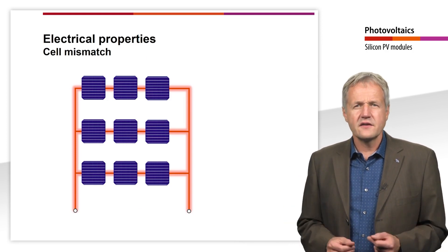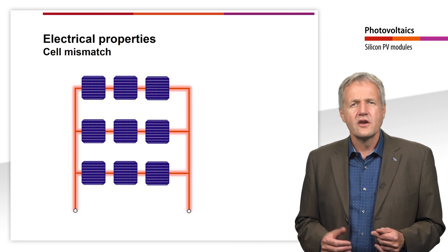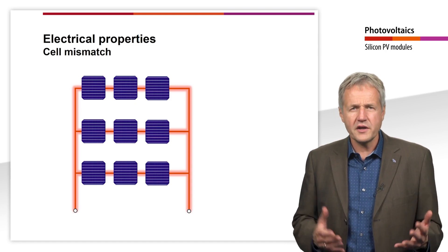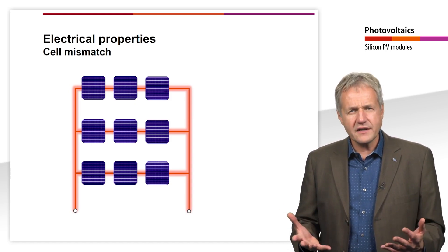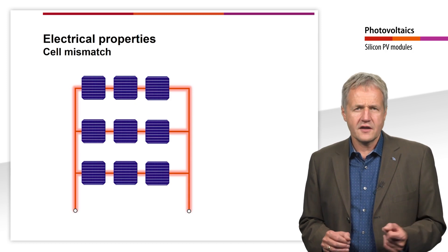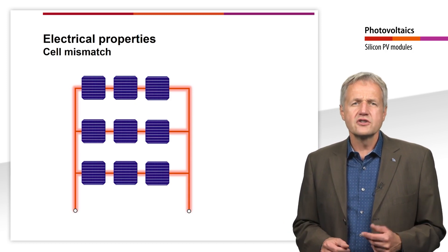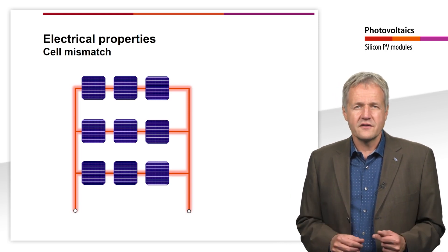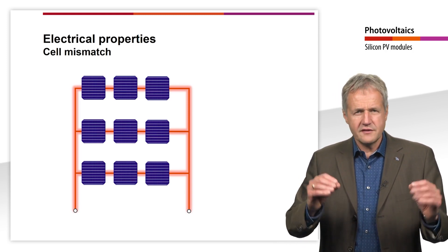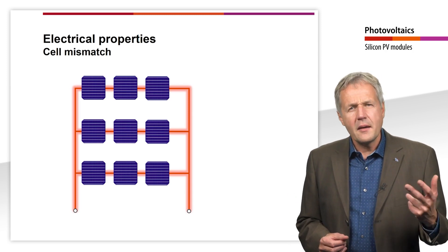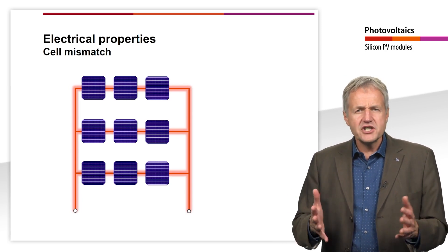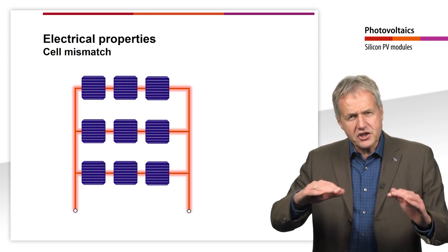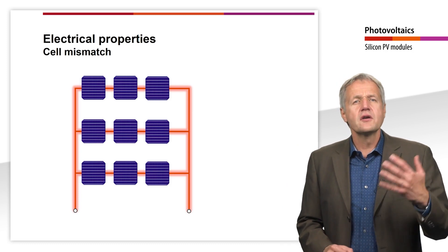In the ideal case that no cells are shaded, one would expect that the efficiency and the fill factor of cells in the corresponding module are identical. In practice, however, this is not the case, since some additional losses occur in the module. Firstly, there are ohmic losses in the cell connectors between the cells. In addition, there may be slight deviations in the electrical properties of the individual cells. These deviations are also called mismatch.